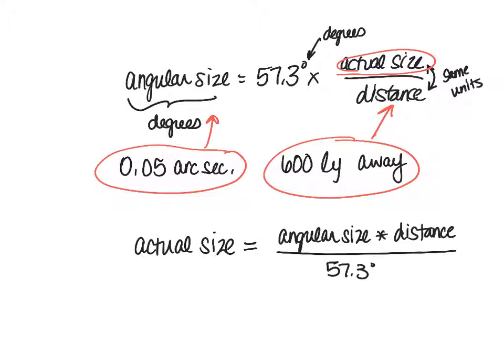And we would also divide by the 57.3 degrees. And you can see here now, if the angular size and this are in degrees, those degrees will cancel out and our actual size will have the same units of the distance.